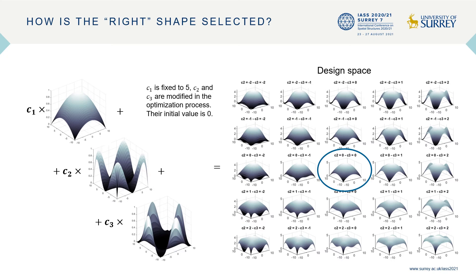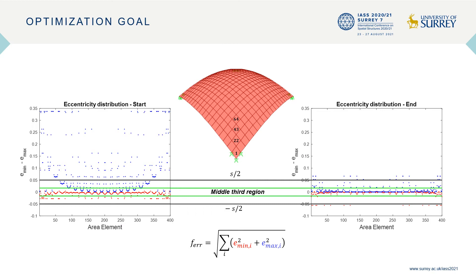With the aim of finding a shell shape as much as possible r-funicular, we have developed a shell shape optimization process where three shape functions are linearly combined to form a resulting shape. The right picture shows a few possible shapes obtained by fixing the coefficient c1 to 5 and modifying c2 and c3. What we want to minimize in the shell optimization are the extrema of the generalized eccentricity.